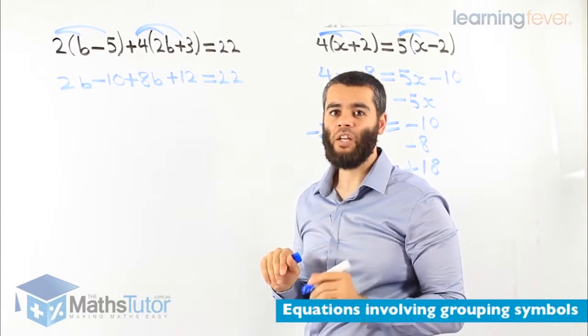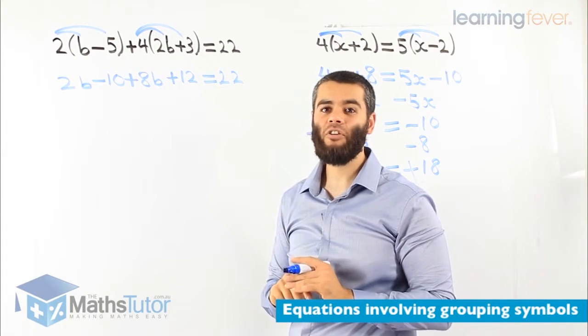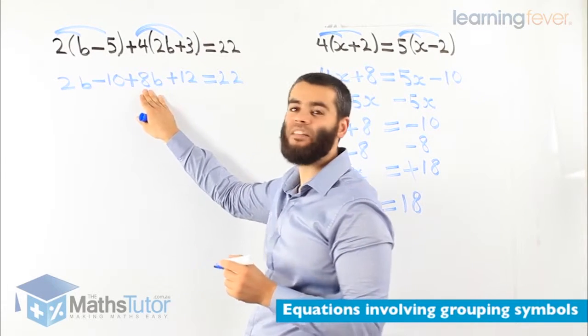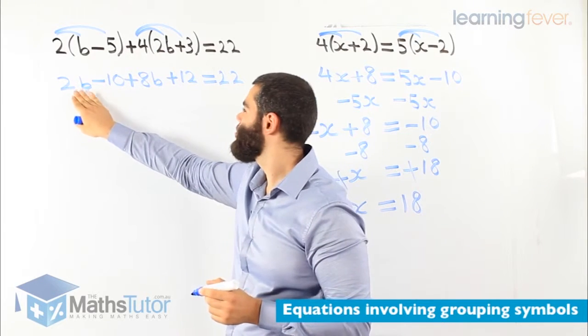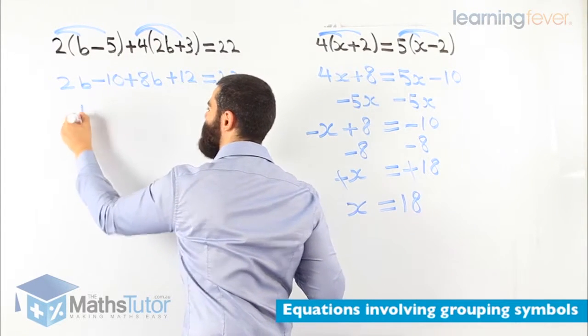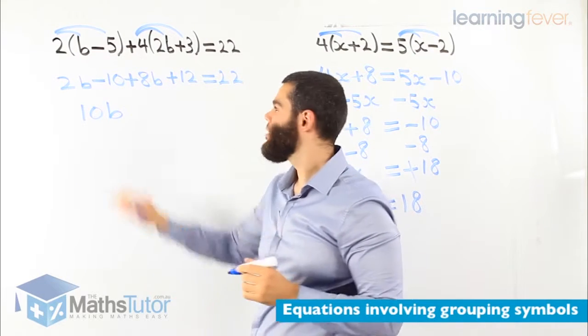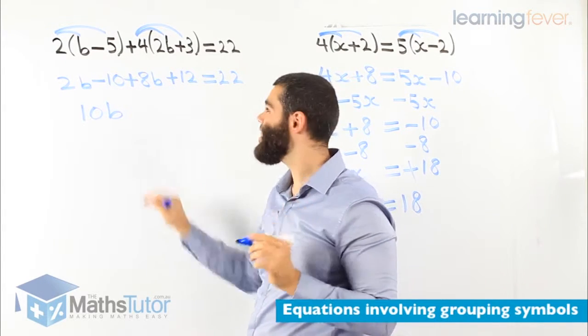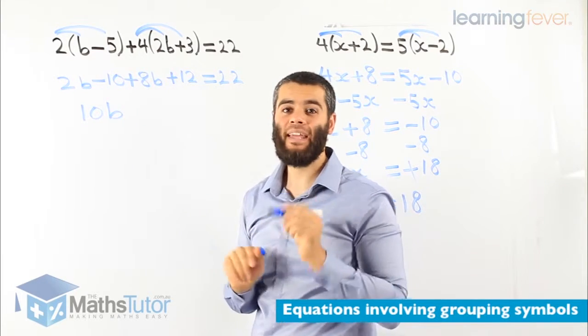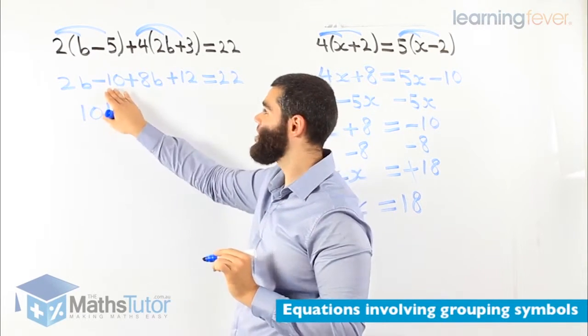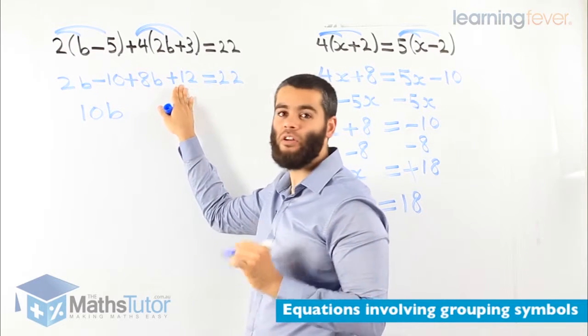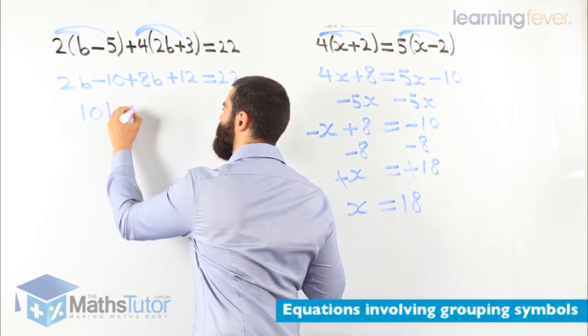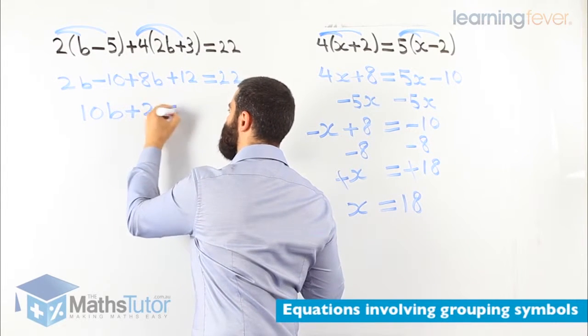What do we do next? Very important. We can identify here that we are going to collect like terms. We are going to add or subtract the like terms. 2b plus 8b. That negative belongs to the 10. So 2b plus 8b is 10b. Now negative 10 has another like term. There it is. Negative 10 plus 12. You notice here we are not saying 10 plus 12. We are saying negative 10 plus 12. I have seen too many students. They stuff up. Why? Because they say 10 plus 12. No. It is negative 10 plus 12. It is a total different answer. So negative 10 plus 12 is positive 2 equals to 22.